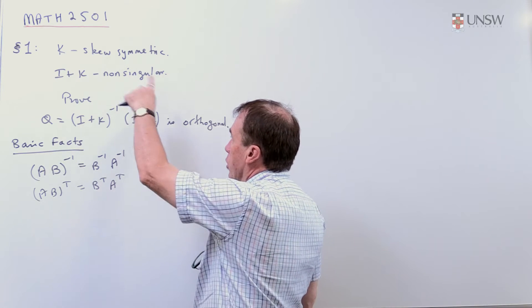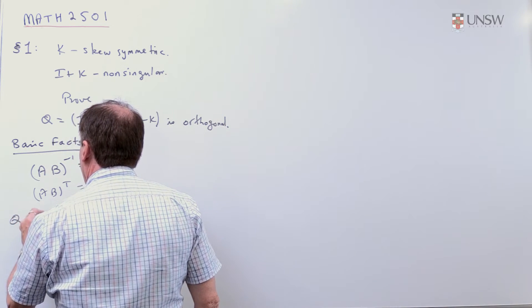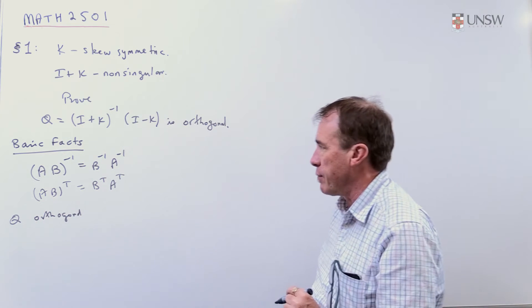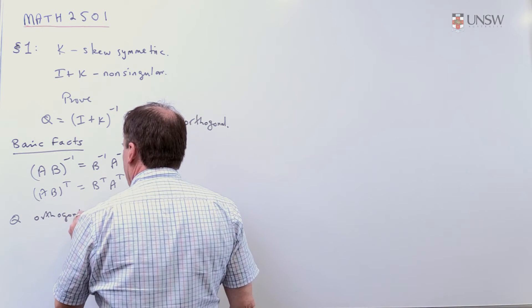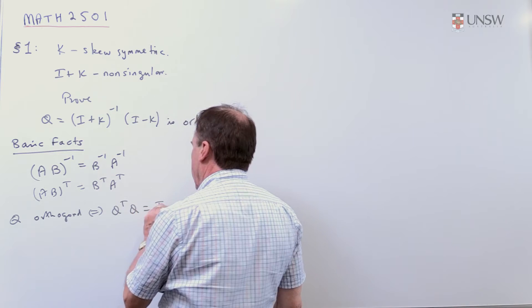Also, remembering what these words mean. To be orthogonal, so Q orthogonal. Q doesn't necessarily have to be square, but will be in this problem. So, Q orthogonal means that Q transpose times Q is the identity.